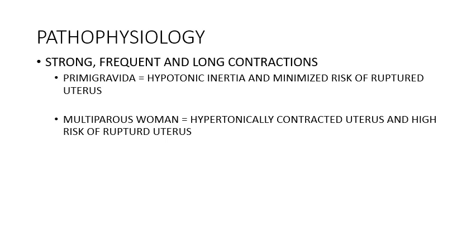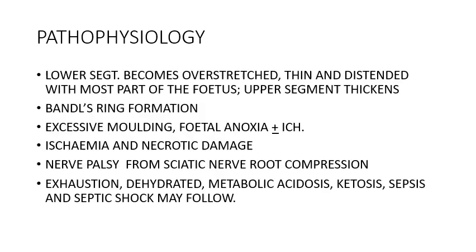Regarding pathophysiology: contractions are present but the child is not descending. In a primigravida there is hypotonic inertia — uterine muscles tire easily — so there is not much risk of rupture. In a multigravida, the uterus is hypotonically contracted with high risk of rupture. The lower segment becomes overstretched and thin, while the upper segment thickens, leaving a Bandl's ring formation. I advise you to look up Bandl's ring on Google.